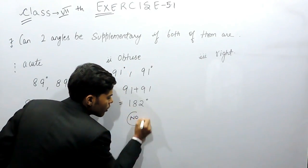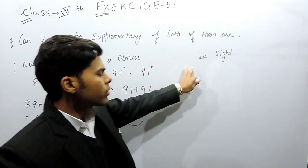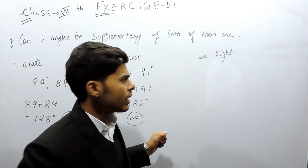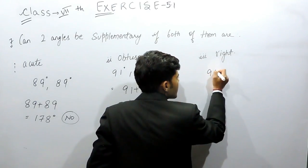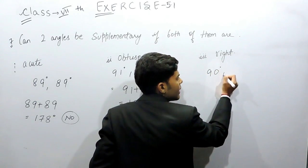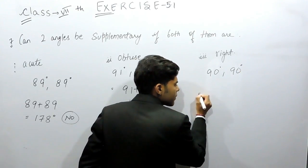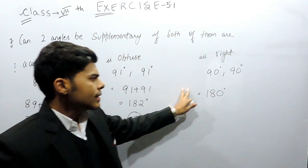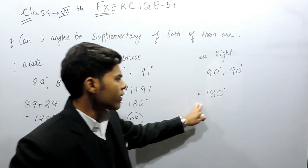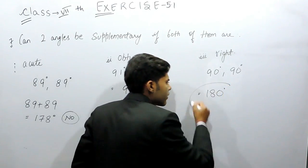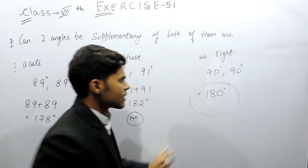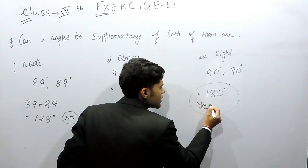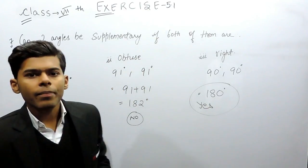For the third part: right angles are equal to 90 degrees. Two right angles means 90 plus 90, which equals 180 degrees. Since supplementary angles must sum to 180 degrees, a pair of right angles does form supplementary angles. So the answer is Yes.